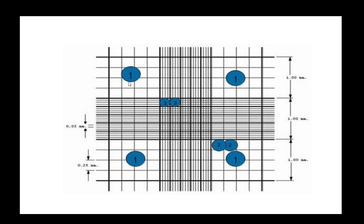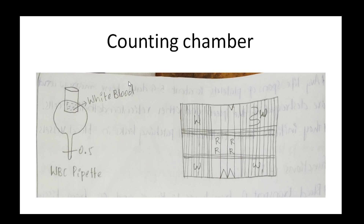Under the microscope, the chamber should be clearly visible. We place the counting chamber under the microscope and make sure it is clearly positioned for counting.